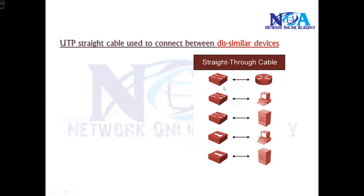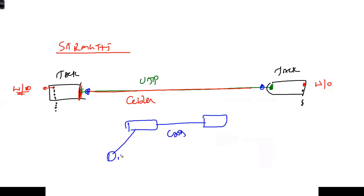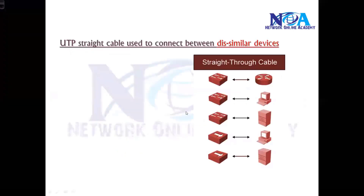Should you memorize the color coding of the cables? From an interview point of view, technically you need to know it. But in production networks it's not required, because new devices — like modern switches — automatically adjust the signals. The devices understand the signaling and adjust automatically. But as a foundation, you need to know the basic things.